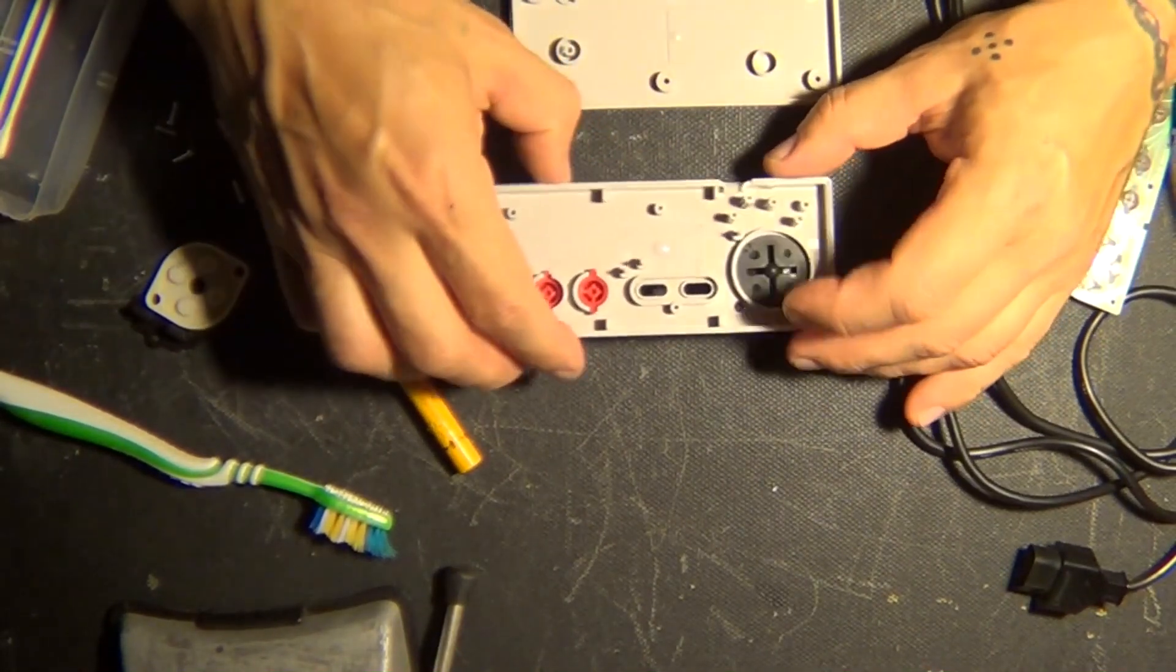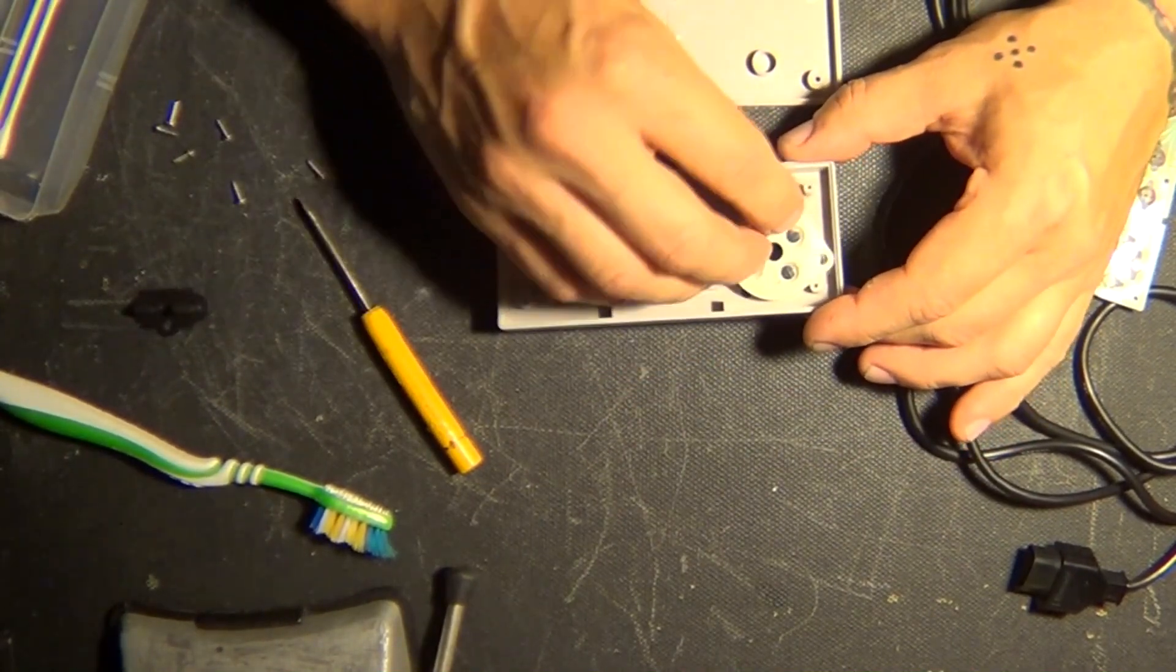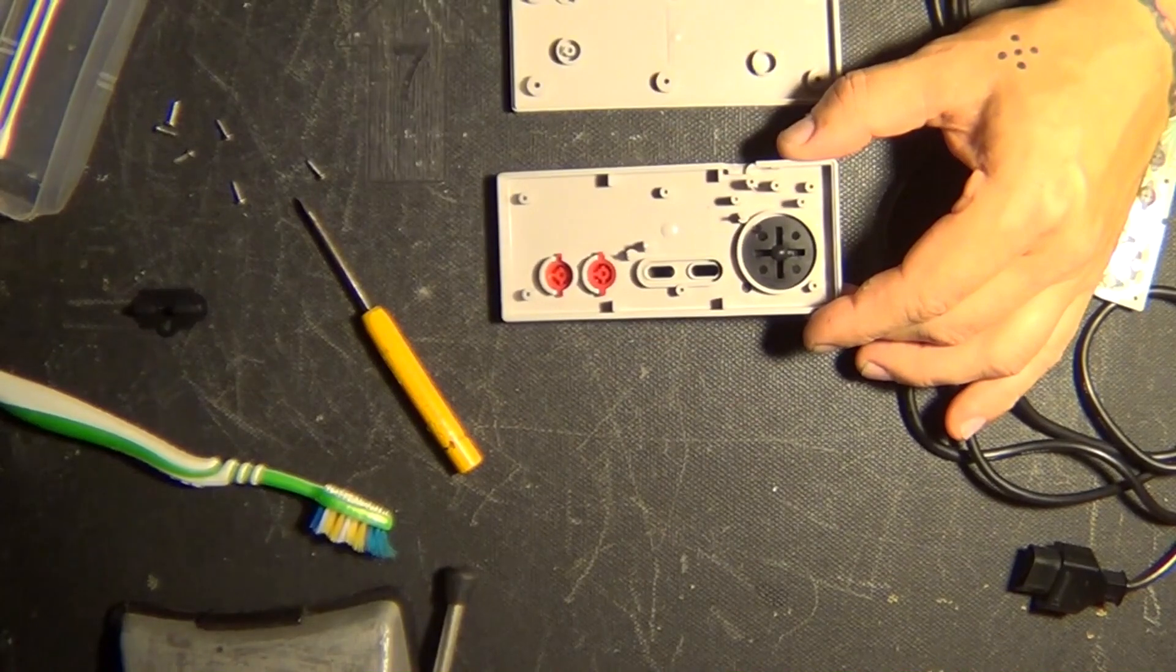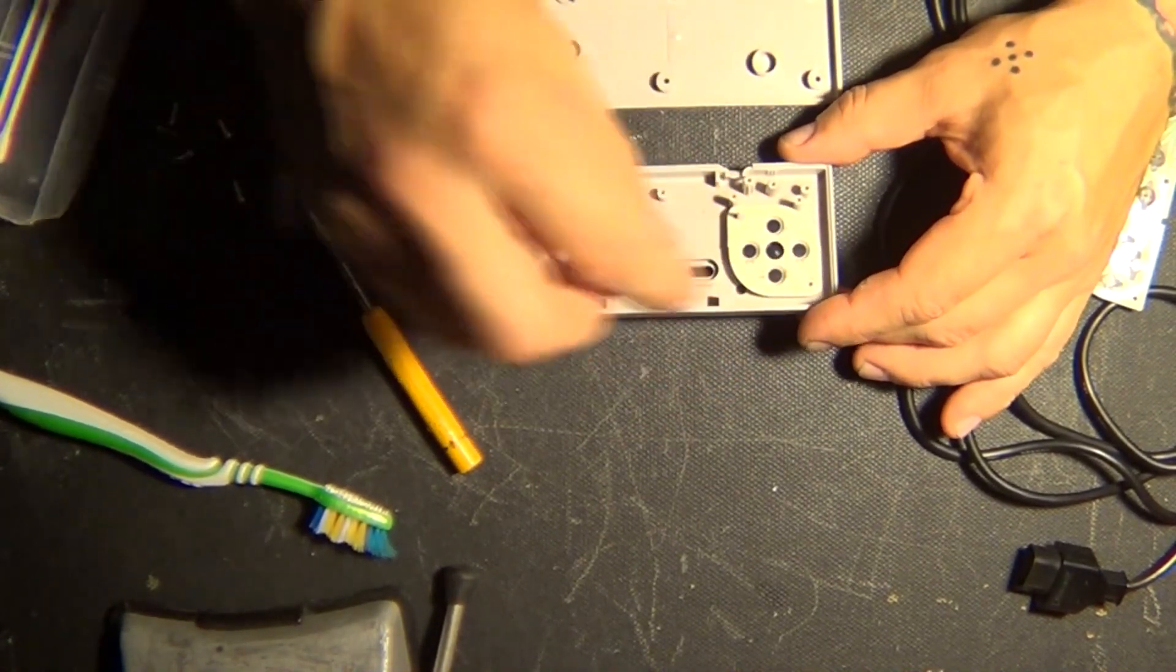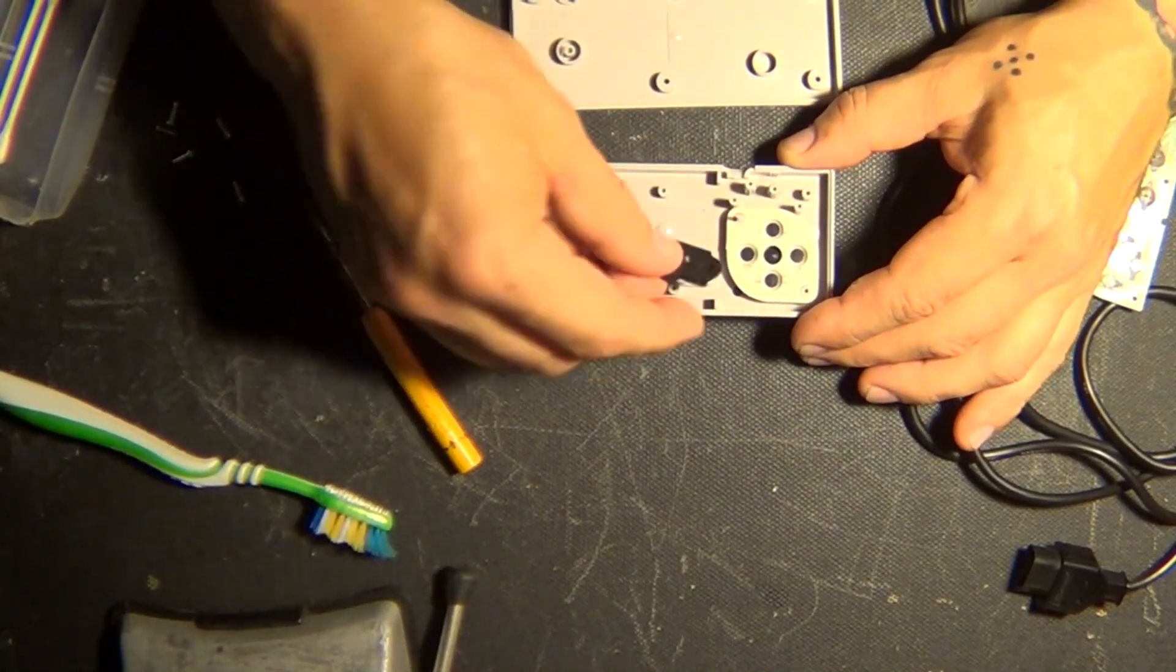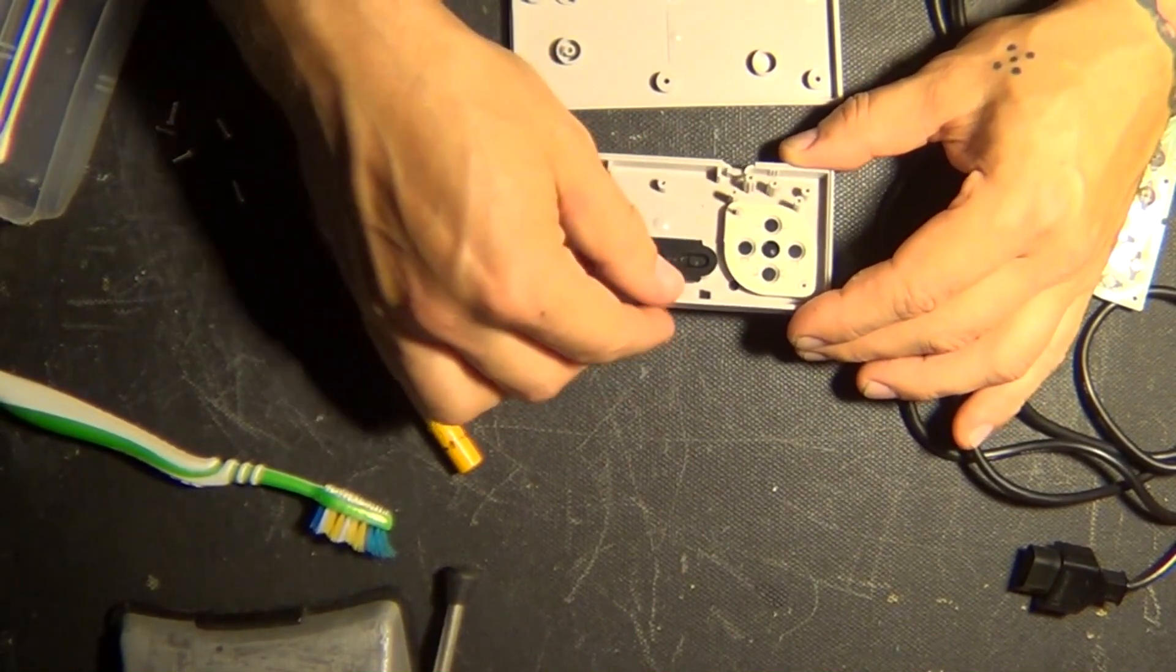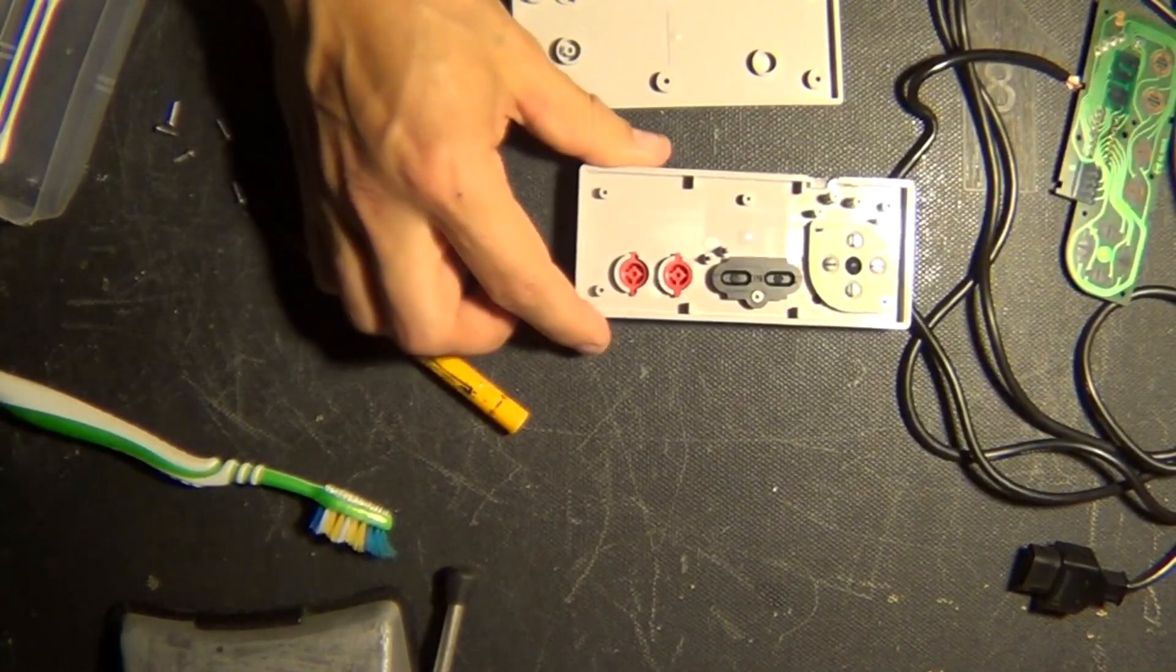I'll go like that. Then, I believe it was this way, right? Yeah. Like that. Start and select button. Like so. And then, we have a pad that is missing. Where is it?